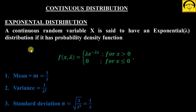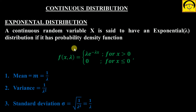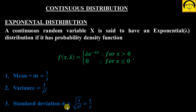Discrete mein aapne dekha tha ke binomial ya Poisson mein hum summation use karte the, lekin yahan per instead of summation we will use integral. Iske limit dekh lijiye: x is greater than zero, below zero it is zero. So f(x, λ) — lambda is one parameter — and f(x, λ) = λ e^(−λx). Iska mean kya hota: 1/λ. Variance: 1/λ². Standard deviation: 1/λ. Means iska mean and standard deviation dono same hota hai.